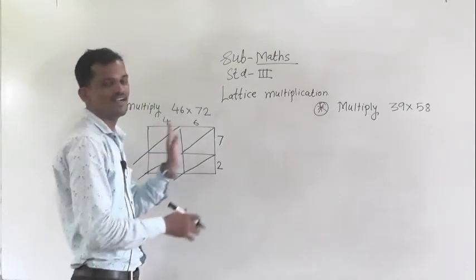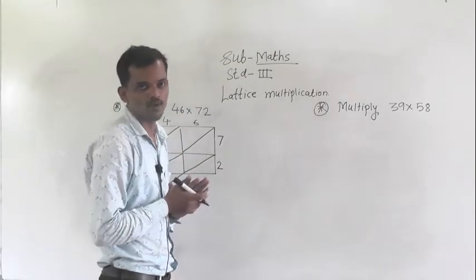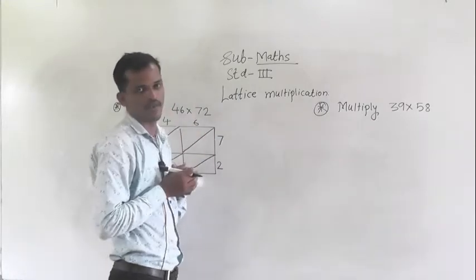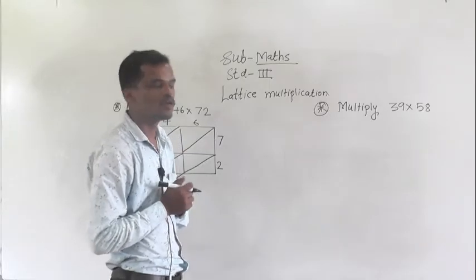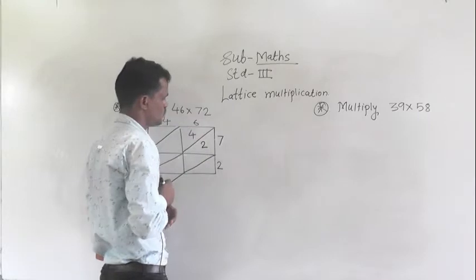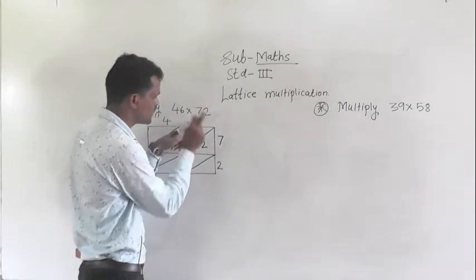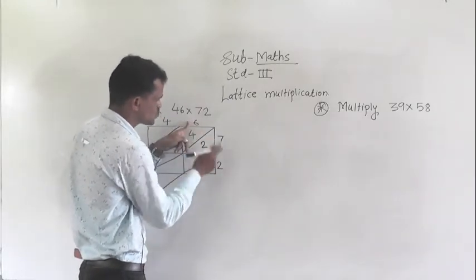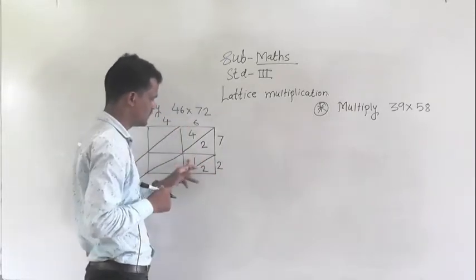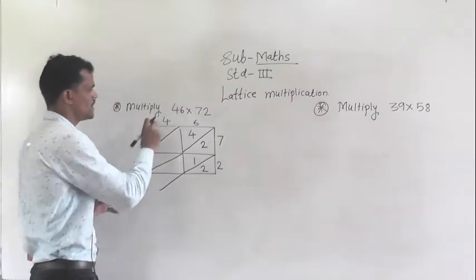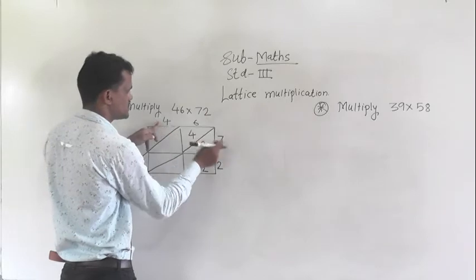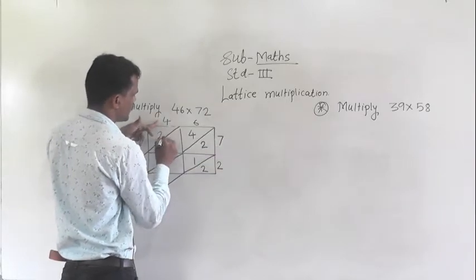Now next step, multiply the addressing numbers. First, 6 multiply by 7. 6 sevens are 42, so write here 42. Then next step, multiply this 4 by 7. 4 sevens are 28.